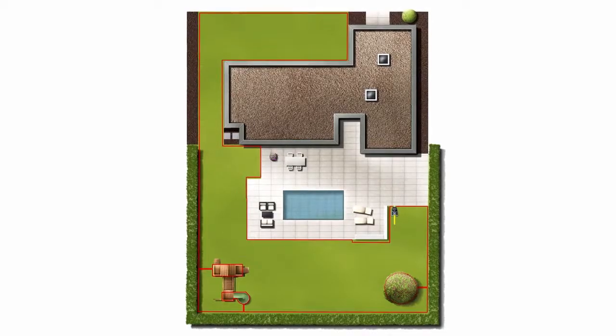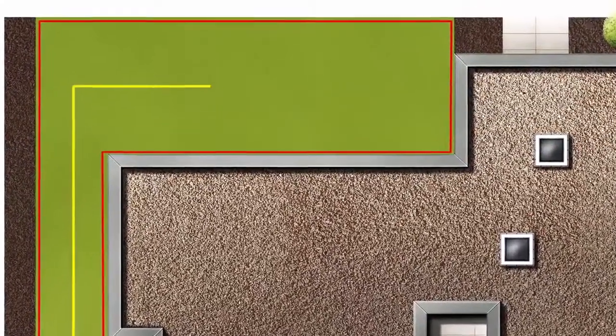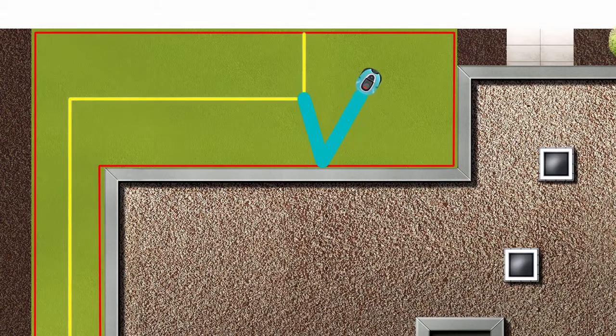If you have a hard to reach area in your garden, you should lay the guide wire into this area. This will allow your robotic lawn mower to mow this area too.